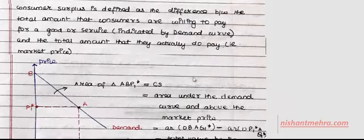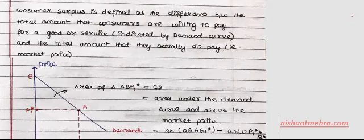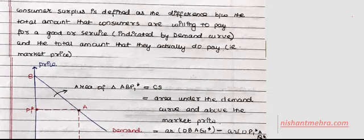Consumer surplus is the difference between the total amount that consumers are willing to pay and the total amount that they actually do pay. For example, if I want to pay 10 rupees for a particular thing rather than go without it, and I'm being asked to pay only 5 rupees, then the consumer surplus is 5 rupees — the difference between what I'm willing to pay and what I am actually paying.